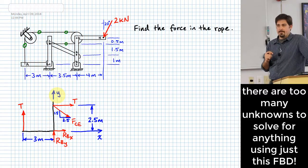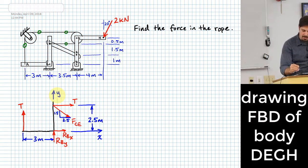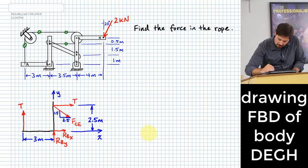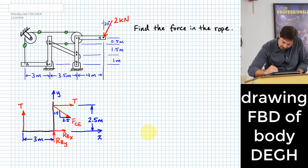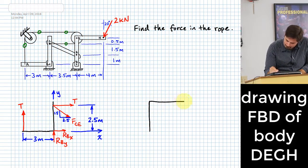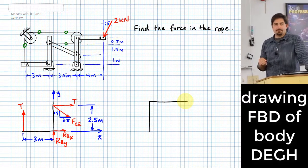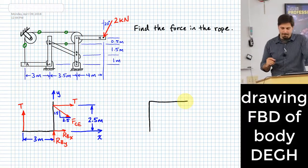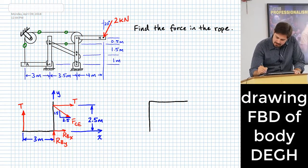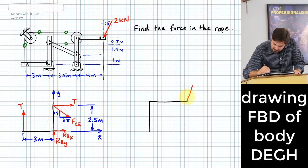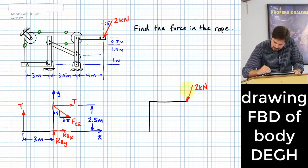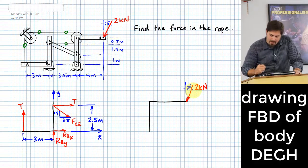But that's not to say we are in bad shape. We have another free body diagram we can draw — it's D-E-G-H. What kind of forces apply to D-E-G-H? Up at the top at H, there's a two kilonewton force applied at a specified angle — 20 degrees relative to the y-axis.